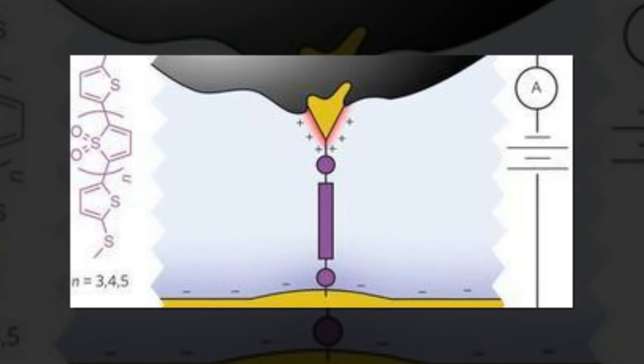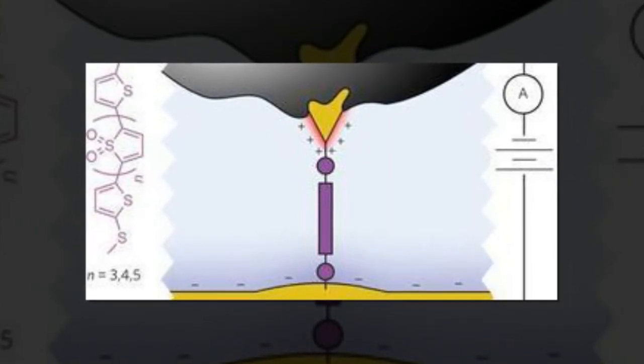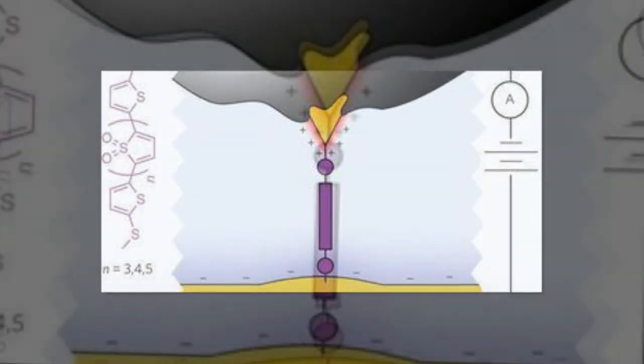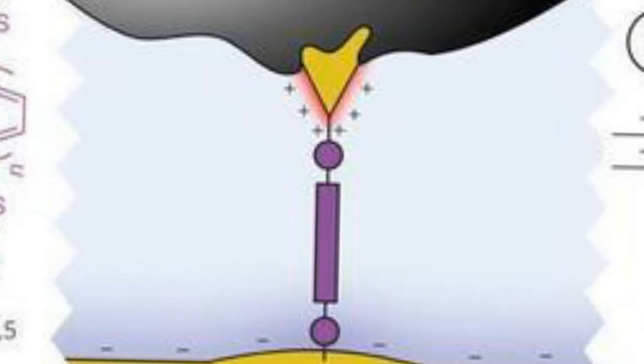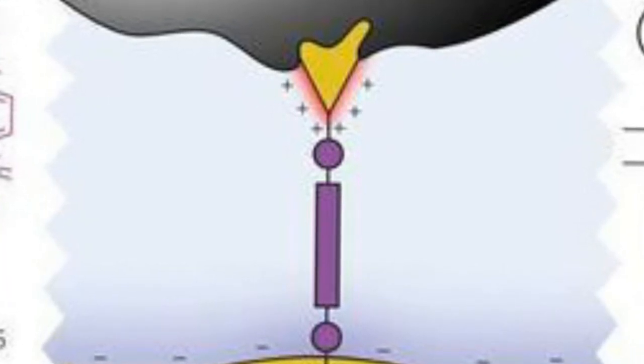The asymmetry necessary for diode behavior originates with the different exposed electrode areas and the ionic solution, he says. This leads to different electrostatic environments surrounding the two electrodes and superlative single molecule device behavior.